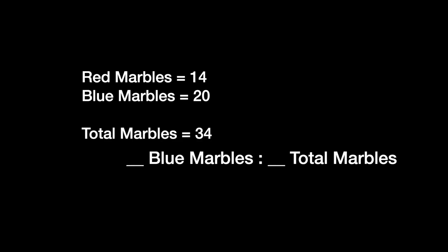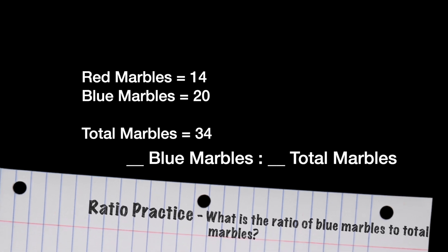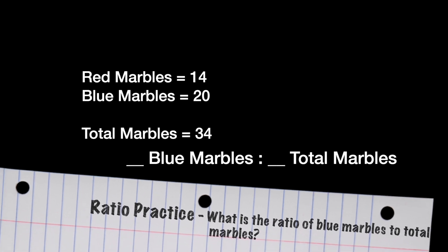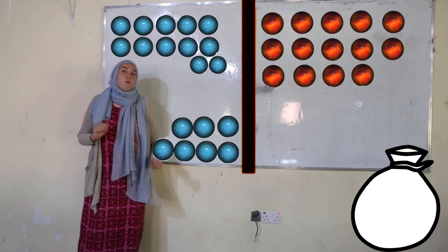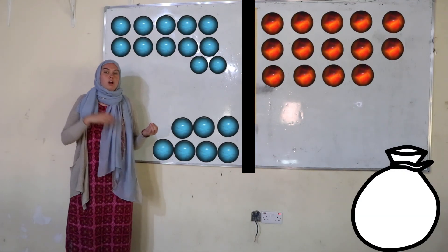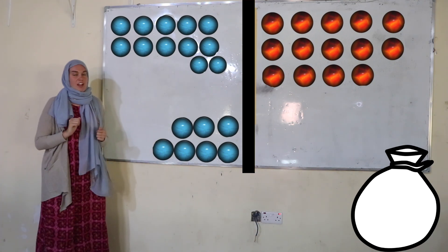Now let's compare the number of blue marbles to the total number of marbles in our bag. So, we have a ratio of 20 blue marbles to our overall number of marbles, which is 34. Now, let's simplify together.